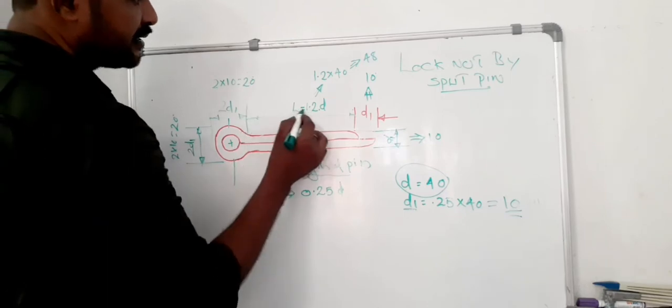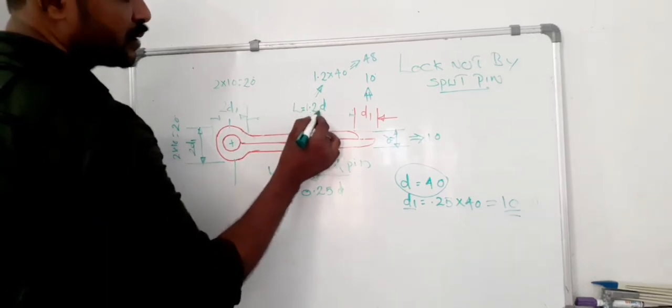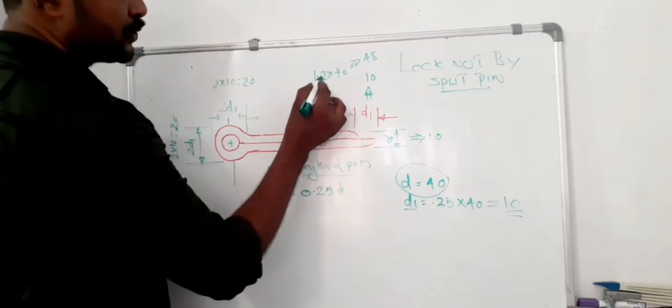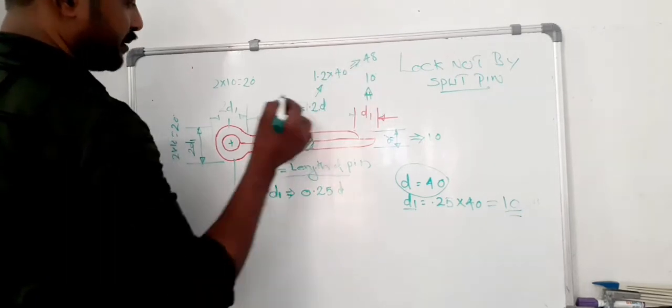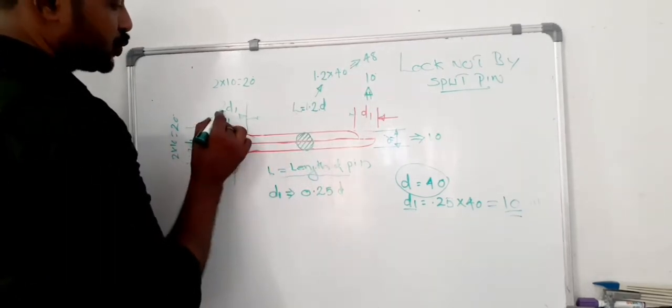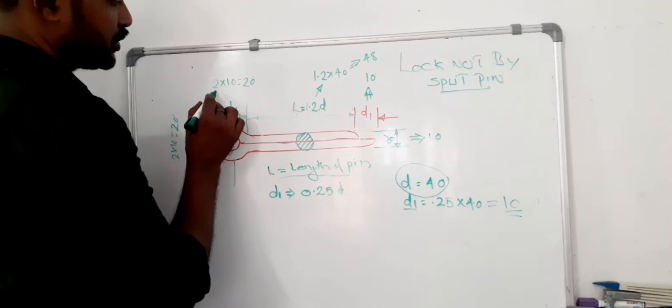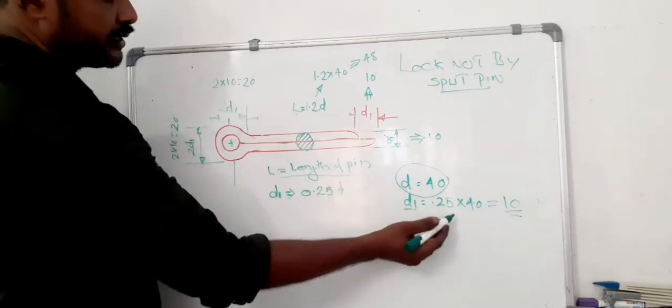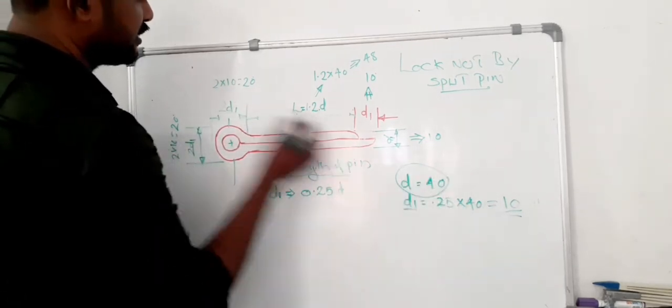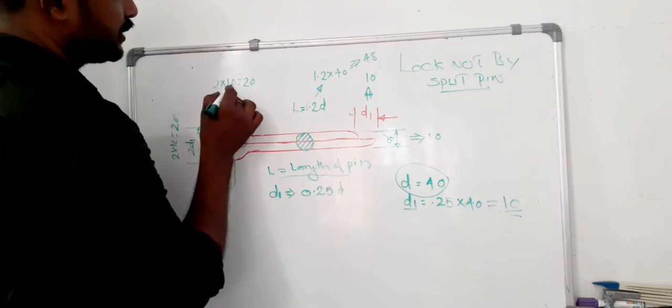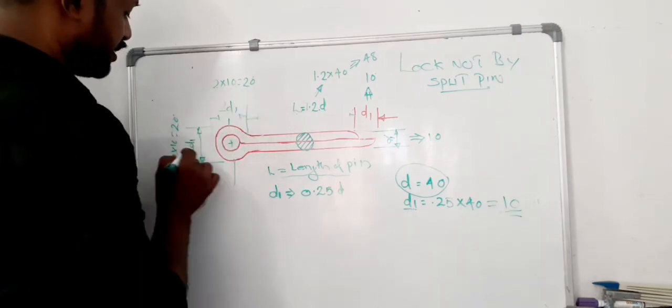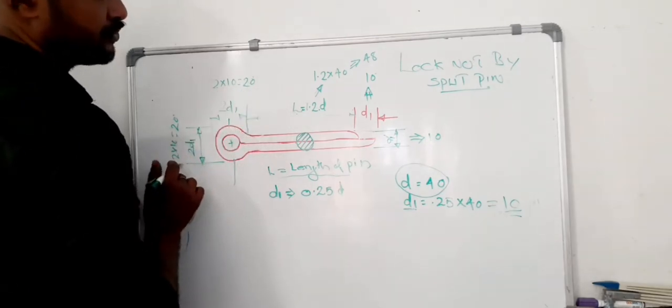And the length value is given, that is 1.2d. That is 1.2 into 40 equals 48 mm. And this value is 2d1. That is 2 into 10 equals 20 mm. And this is also 20 mm.